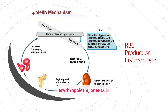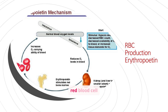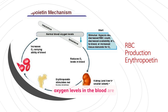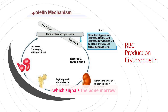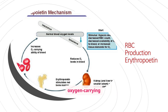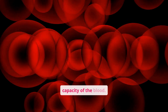Erythropoietin, or EPO, is a hormone produced by the kidneys that stimulates red blood cell production. When oxygen levels in the blood are low, the kidneys release EPO, which signals the bone marrow to make more red blood cells, increasing the oxygen-carrying capacity of the blood.